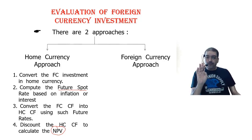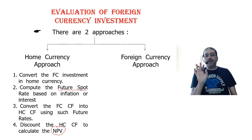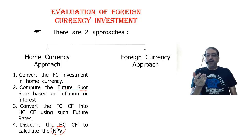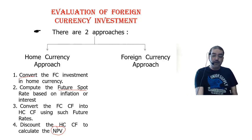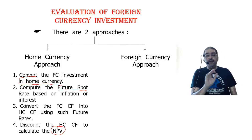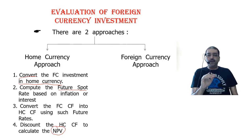Under the foreign currency approach, there are also four steps. Here, I solve the entire problem in foreign currency, and then the final NPV figure is converted into home currency at the spot rate. In the home currency approach, conversion is the first step; in the foreign currency approach, conversion is the last step.